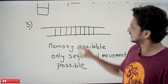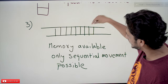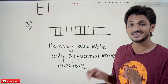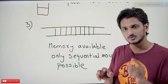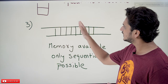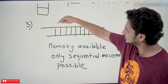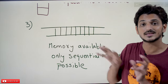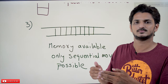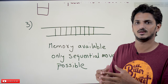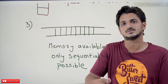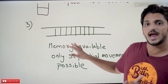Coming to the third part: we have a memory device and we can place characters on it, but we can move only one step forward or one step backward. We cannot jump directly from one location to another — we can only move sequentially, one position at a time. Using that capability, how do we do computations and write logics? That is what the subject deals with in the last part.